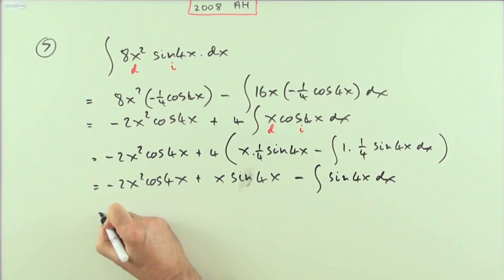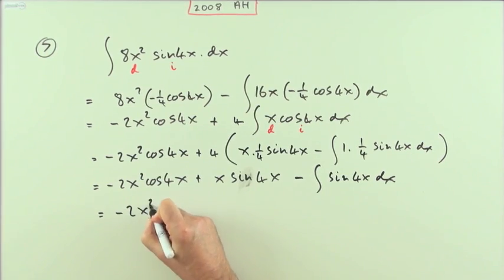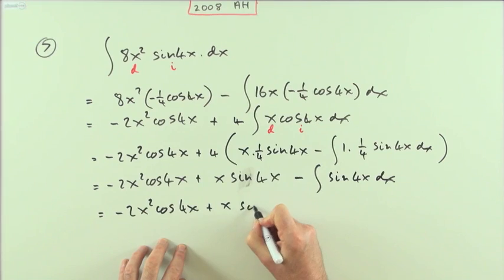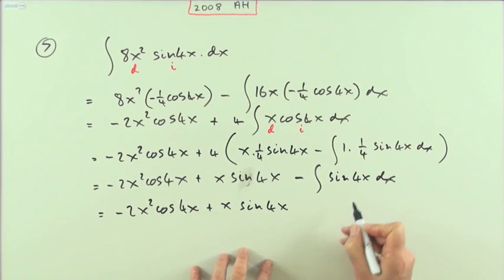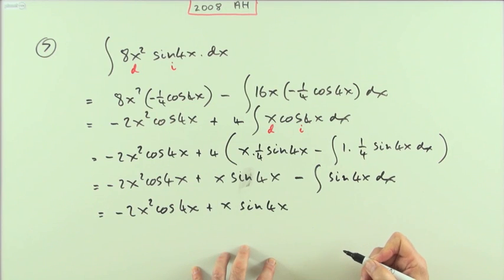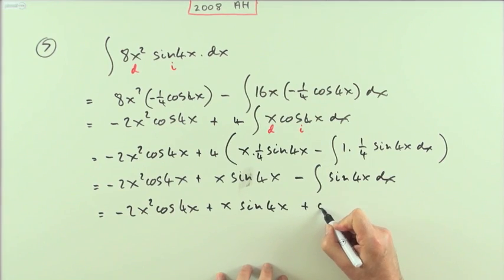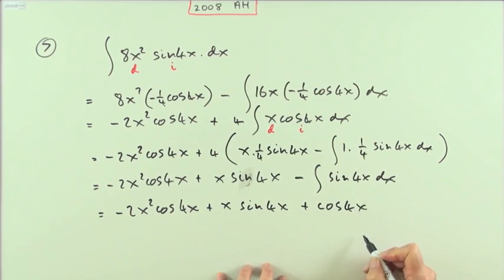I've got negative 2x squared cos 4x plus x sine 4x. Sine will go back to cos. Cos would have produced a negative sine, and I've got a negative there, so plus cos 4x.